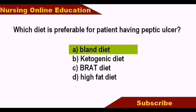The BRAT diet stands for: B for banana, R for rice, A for applesauce, T for toast. BRAT diet is normally recommended for diarrhea. The answer for peptic ulcers remains bland diet.